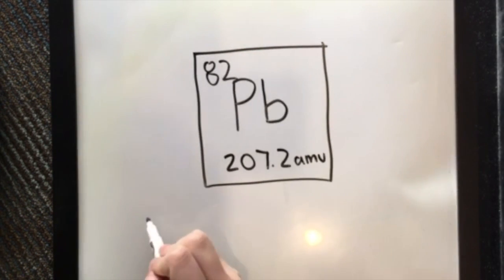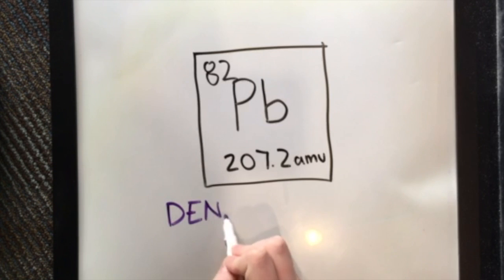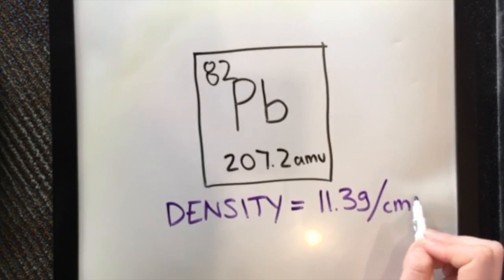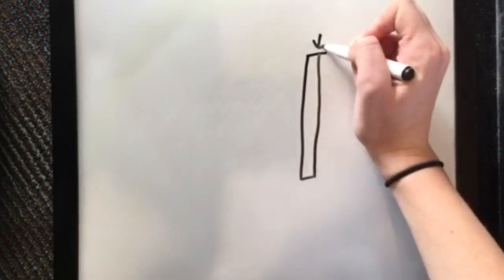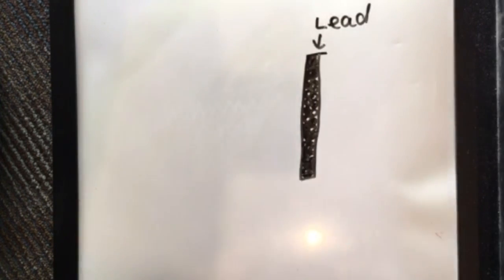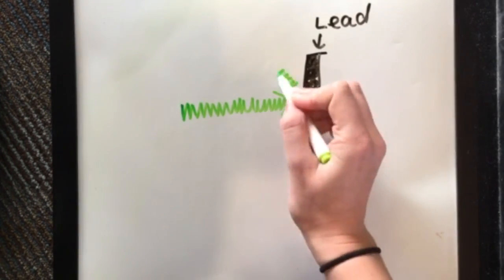Lead also has a very small atomic radius, which means you can pack a lot of lead atoms together in a small space. This relates to its high density of 11.3 grams per centimeter cubed. Because of this high density and small atomic radius, x-rays do not penetrate lead very well, thus protecting us from its effects.